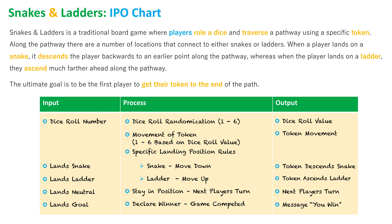I hope this IPO chart has given you a good outline of the inputs, processes and outputs involved in the Snakes and Ladders game. Not just that landing on a snake means you descend and a ladder means you ascend, but the randomization of the dice as a process linking directly into the movement of the token, how landing on a neutral spot signals it is the next player's turn, and how landing on the goal declares a winner.